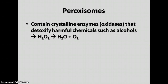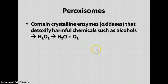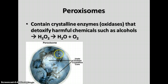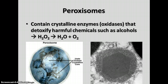There's another organelle called the peroxisome, found in both plant and animal cells. These contain crystalline enzymes called oxidases that detoxify harmful chemicals like alcohol. The process breaks down alcohol into hydrogen peroxide briefly, then into water and oxygen. Peroxisomes have a membrane containing this oxidase crystal inside, and the crystalline core is often polygonal in shape. Here is an electron micrograph showing a peroxisome with its crystalline core. They are necessary in cells to help break down harmful compounds.